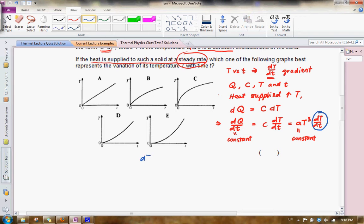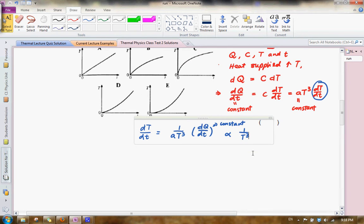So rearranging the equation, we can see that the rate of change of temperature with respect to time can be written as 1 over AT to the power of 3, then dQ dt, which is a constant. So we see that the gradient itself is actually proportional to 1 over t cubed. And this allows us to actually analyze the relationship. Now there are a few key features that we want to actually analyze.